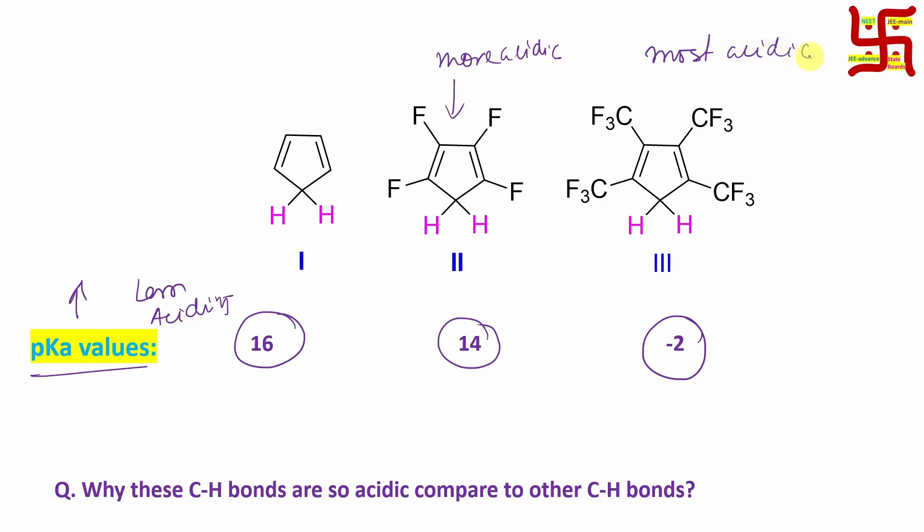Now you can understand that this repulsion, lone pair-lone pair repulsion, how much important it is. And in this case that is absent, but this sigma withdrawing works, so pKa value is so lesser.